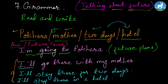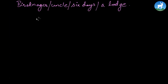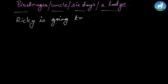We will follow the same pattern. Let's work it out. We have: Biratnagar, uncle, six days, lodge. It's kind of boring using 'I' every time, so maybe you can continue with 'Ricky.' Ricky is going to Biratnagar. Now, because we've already introduced Ricky — the name of a boy or a man — we can use the pronoun 'he.' He'll, meaning he will.